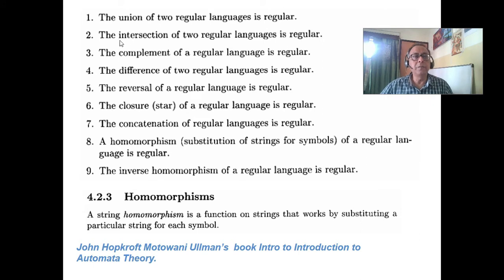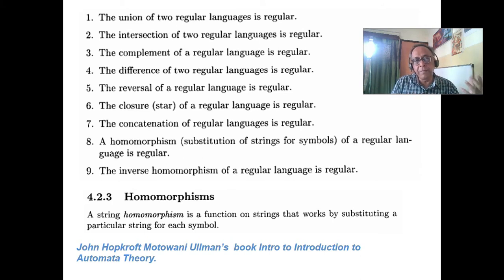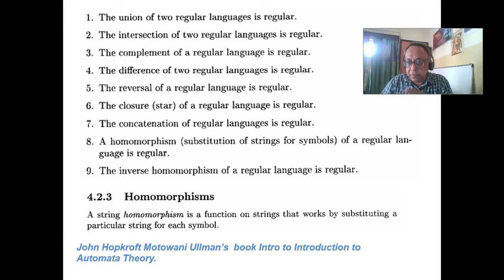This language is very interesting: union of two regular languages is regular, intersection of two regular languages is regular — but that cannot be said of context-free languages; intersection is not guaranteed to hold. The complement of a deterministic context-free language is deterministic context-free, but the complement of a context-free language is not necessarily context-free — so they behave differently.